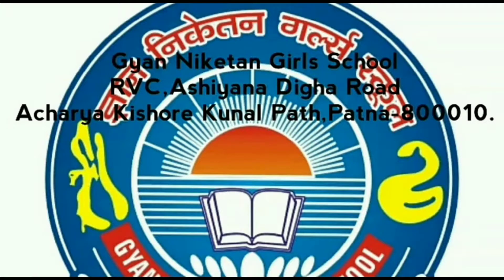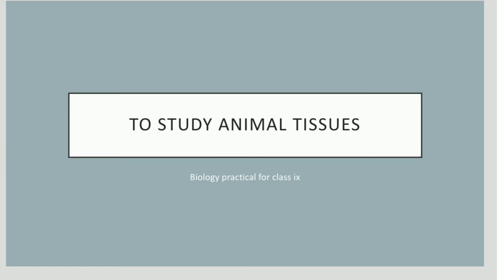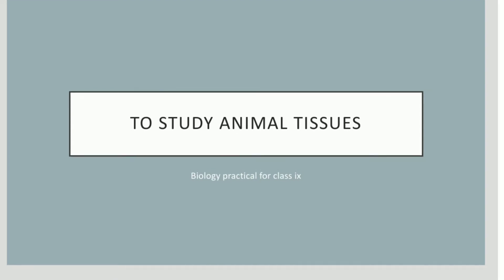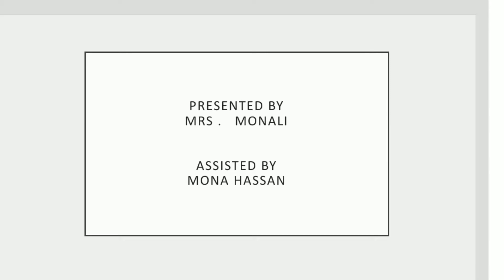We welcome you to the biology laboratory of Gyan Nikethan Girls School. Today our topic is to study animal tissues — that is, striated muscles, non-striated muscles, cardiac muscles, and nerve cells. This experiment is presented by Mrs. Monali and assisted by Mona Hassan.